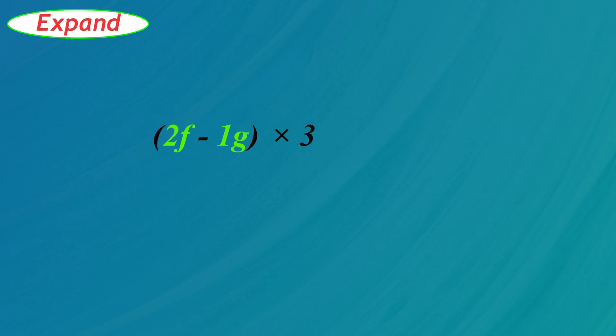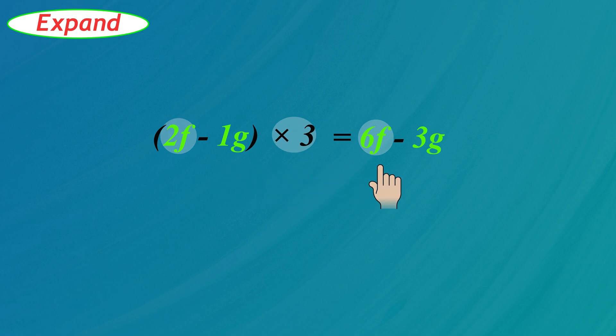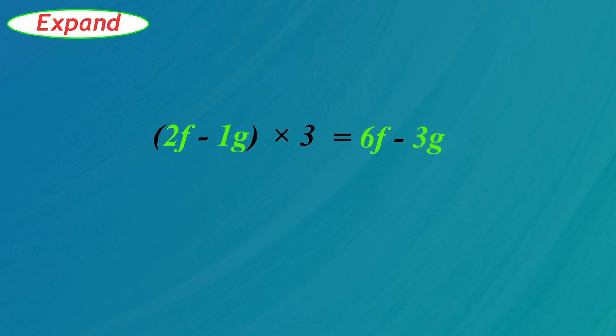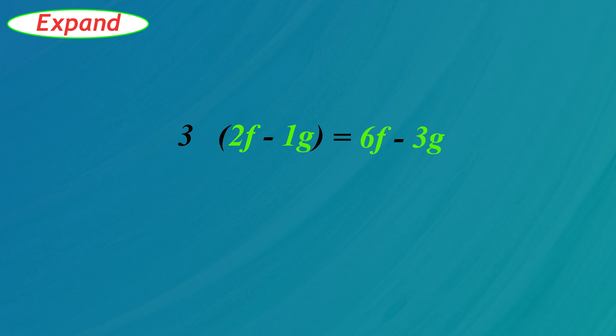Let's expand 2F minus 1G in parentheses, multiplied by 3. In this example we must be careful when working with negative signs. Positive 2F times positive 3 is positive 6F, and negative 1G times positive 3 is negative 3G. The answer is 6F minus 3G. In algebra the multiplying number is usually written in front of the parentheses, and the multiply sign is usually not written.